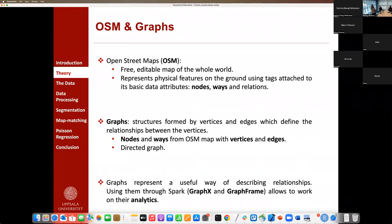Now, OpenStreetMaps is also something that we are using here, and it's a free editable map of the whole world. It represents physical features on the ground, like buildings, roads, and paths, by using tags attached to its basic attributes. The basic attributes of OpenStreetMaps are nodes, ways, and relations. We focus on nodes and ways. Nodes are basically points, and ways are lists of nodes.